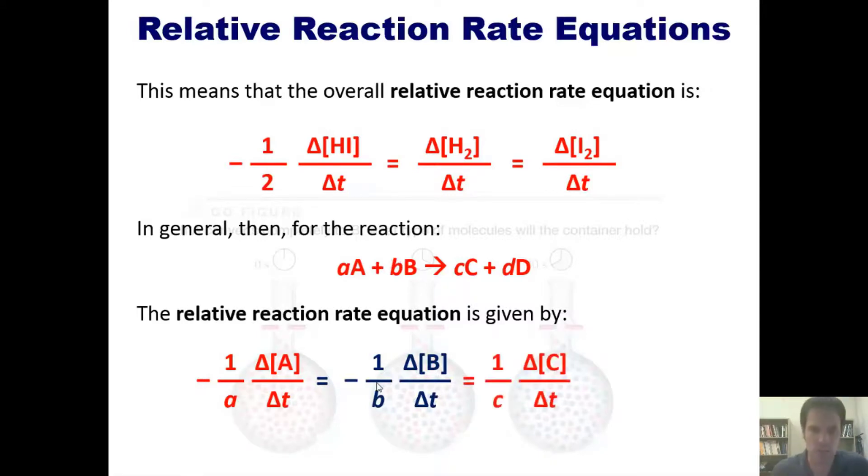all these rates happen to be equal to the appearance of products. So the products, analogous terms, don't have negative signs in front of them. They are one over their respective coefficients multiplied by their individual delta concentrations over delta t.